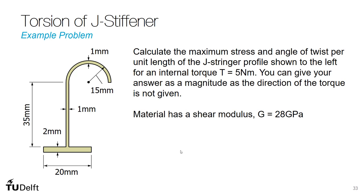The problem asks us to calculate the maximum stress and angle of twist per unit length of the J-stringer profile for an internal torque of 5 Newton meters. We can give our answer as a magnitude as the direction of the torque is not given. The material has a shear modulus of 28 gigapascals.